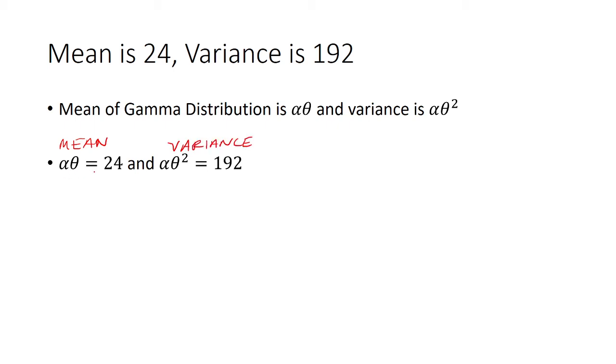Now in order to solve these, you can either divide both of these or do a substitution. Let me show you both ways. You can take alpha theta squared and divide it by alpha theta, which is 24. And so here you would get that theta is 8.